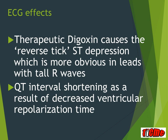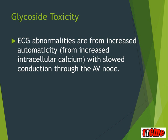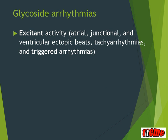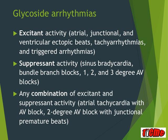Blocking the ATPase also shortens ventricular repolarization time, leading to a shorter QT. In therapeutic digoxin, the classic reverse-tick ST depression in the lateral leads is visible. ECG abnormalities in cardiac glycoside toxicity arise from both increased automaticity — due to extra calcium driving extra beats — and slow AV node conduction. This produces a mix of excitant activity (extra beats from anywhere in the heart, tachyarrhythmias, triggered arrhythmias), suppressant activity (sinus bradycardia, bundle branch blocks, AV blocks), or combinations such as multifocal ventricular ectopics with slow AF, as seen in the first ECG.